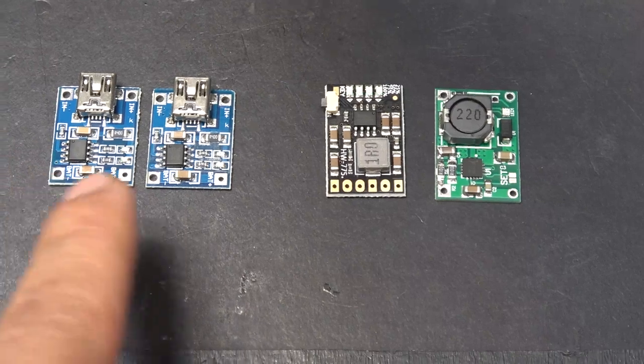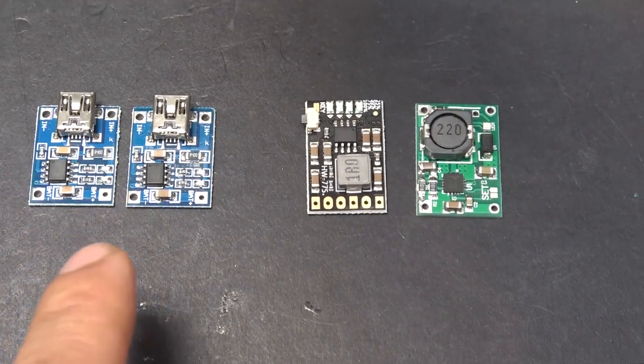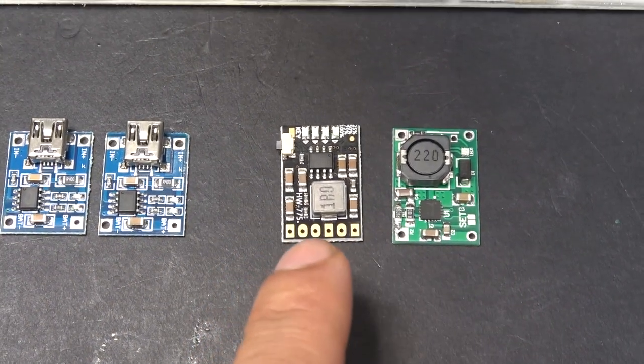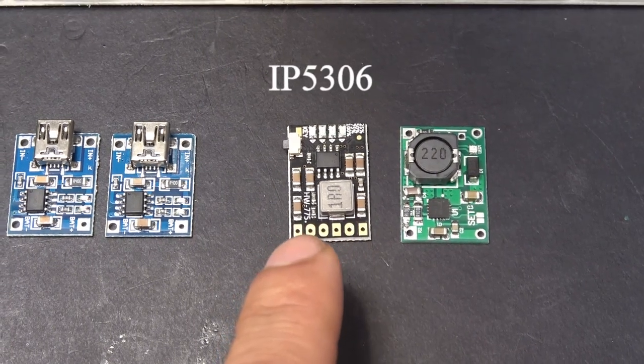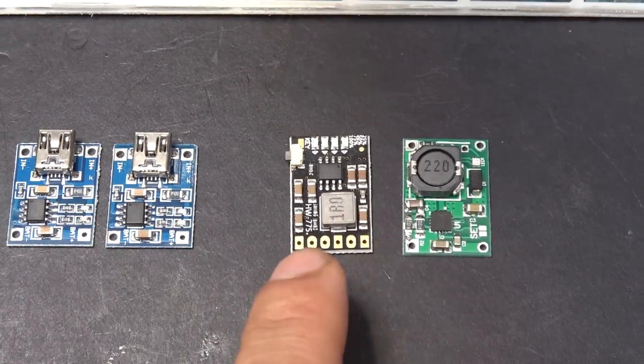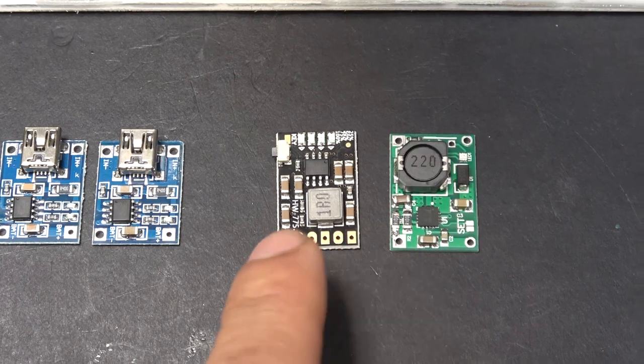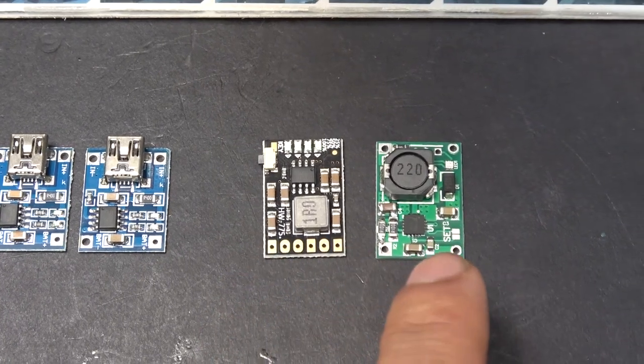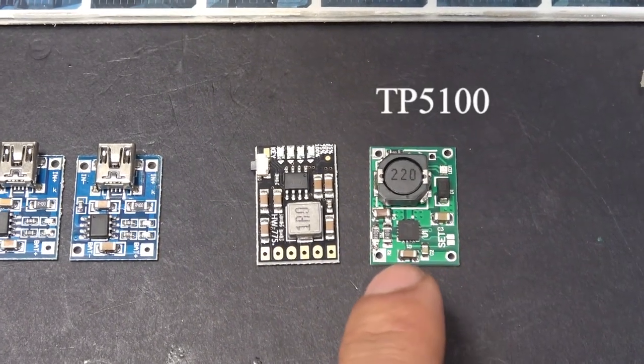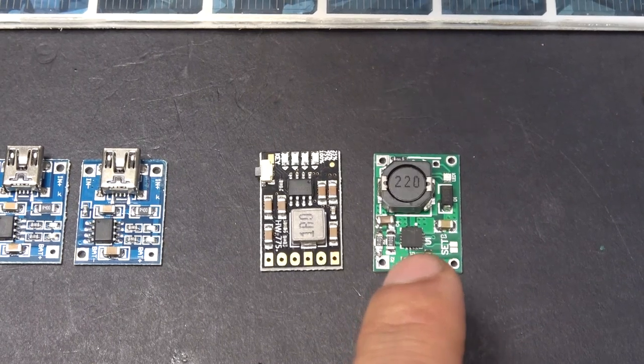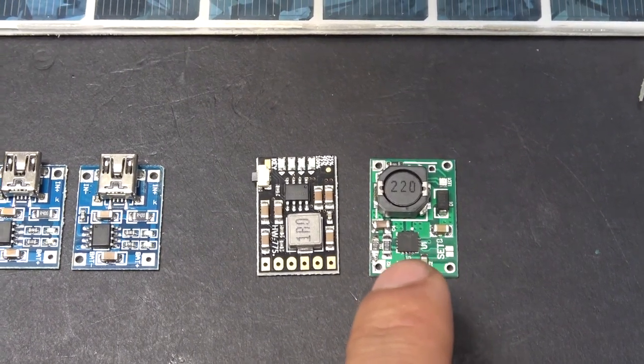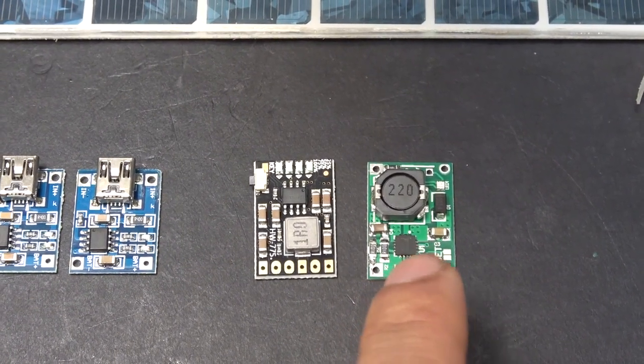Besides the TP4056 board, you can also use other charging boards. This is the IP5306 which puts out 2 amps, so you don't have to put two in parallel - just one board is enough. This is a TP5100 that puts out 2 amps and you can also use this - just one board will be enough for this project.